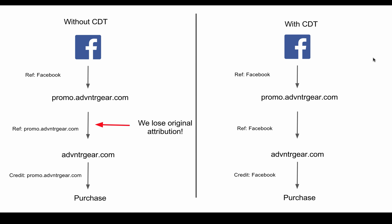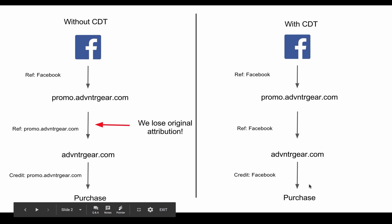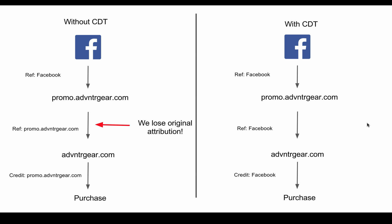Now let's go over to cross-domain tracking. Say that we set up cross-domain tracking properly — here's what's going to happen. Promo.adventuregear.com and adventuregear.com are now basically one website; Google Analytics sees it as one website. It's going to pass all the information all the way through. So we have a Facebook reference first, it goes here, and then when they hit the main shopping cart, because we have cross-domain tracking set up, it's going to say that Facebook is now the referrer. And when we get down to the final purchase, the credit will go to Facebook.